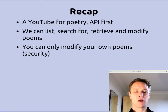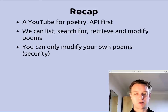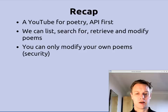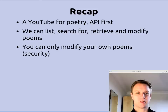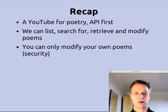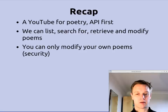So first off, what have we done so far? Well, if you look back at previous videos, you'll see we've been building up a REST API. It's implemented in Python with web.py, really just because that's the clearest code I could find to explain the concepts. We're making a website that stores and displays poems — similar to what YouTube does for videos but for poems. We're doing it API first, so when we build the website we can use the same functionality we've already built up. At the moment we can list things, search for things, retrieve things, and modify things. We've added security, which means you're only allowed to modify your own poems and only allowed to post a poem when you're logged in.